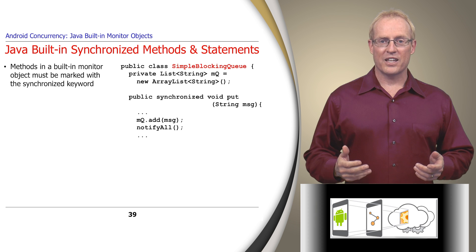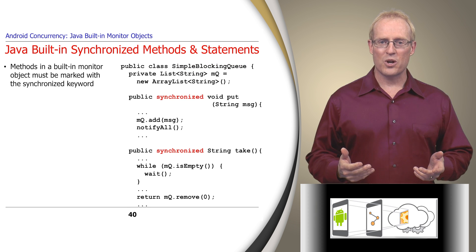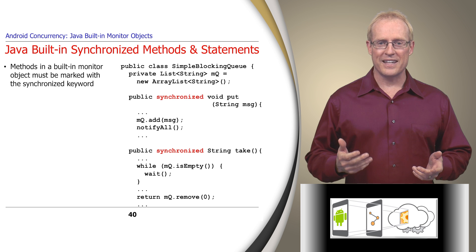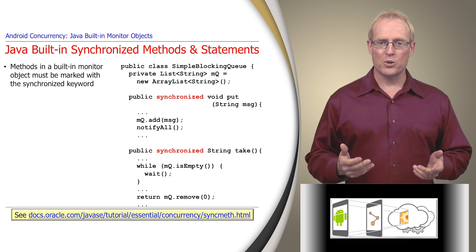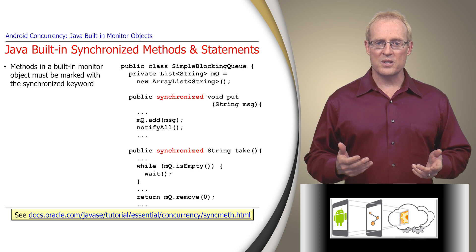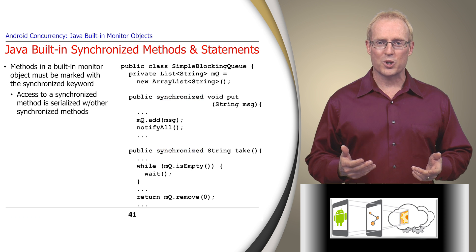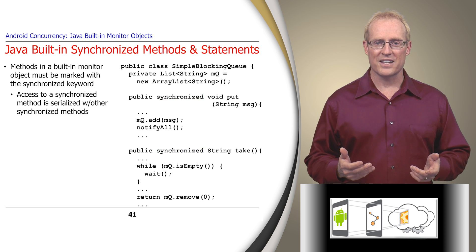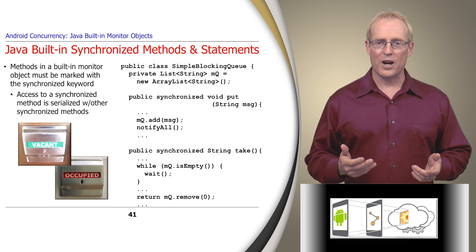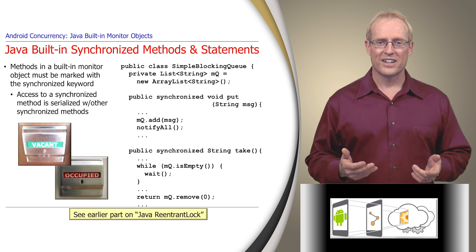To make Simple Blocking Queue a monitor object, we'll first add the synchronized keyword to its put and take methods. Although this is not the complete solution, it's the starting point to ensure access to the queue's put and take methods is serialized, similar to the access protocol for an airplane restroom discussed in an earlier video.